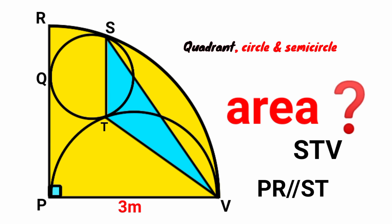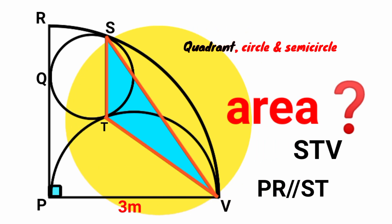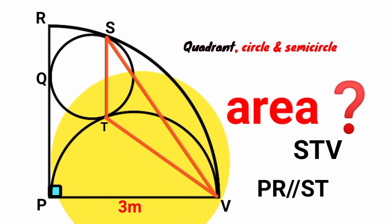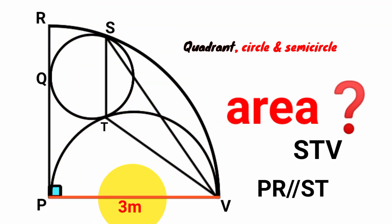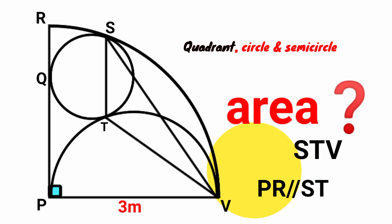We are asked to calculate the area of triangle STV. We can see this is a semicircle and this is a quadrant. We have the length of this side to be three meters, and we are told the line PR is parallel to line ST. So how can we solve this?